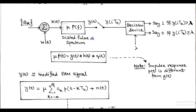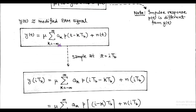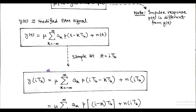The output y(t), that is called the modified PAM signal, is sampled at t = i·T_b. We get a sampled signal y(i·T_b) = μ · Σ a_k · p((i−k)·T_b) + n(i·T_b). Here we simply substitute t = i·T_b in the modified PAM signal.